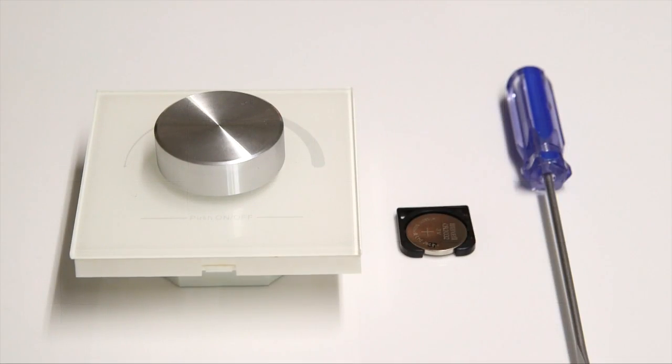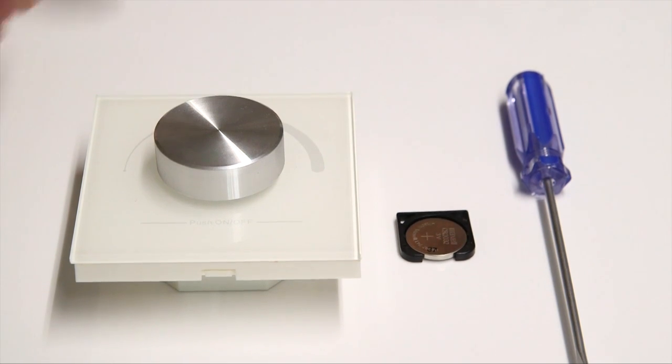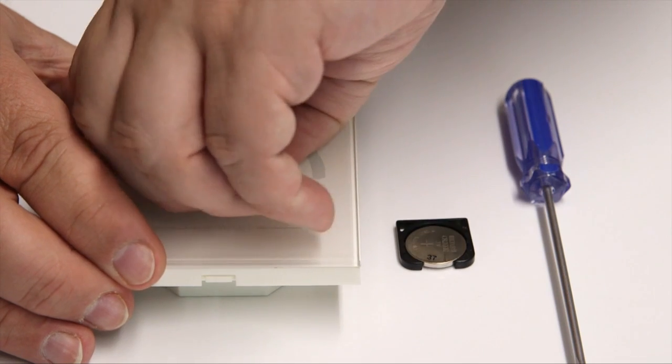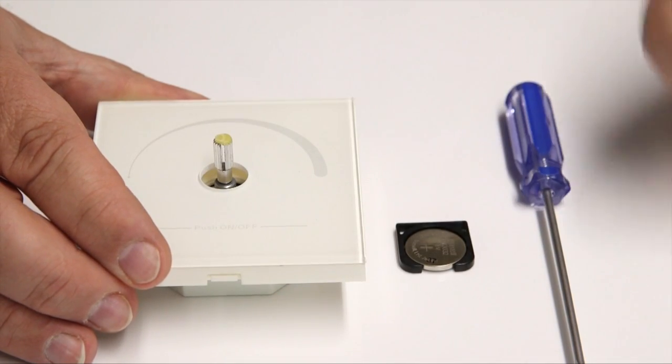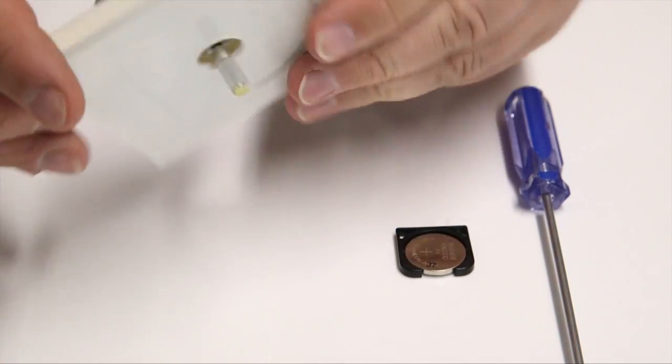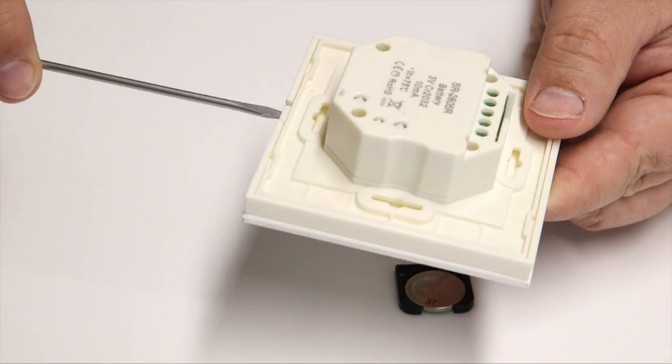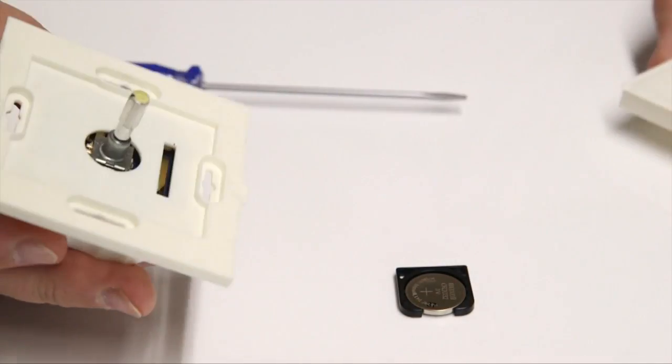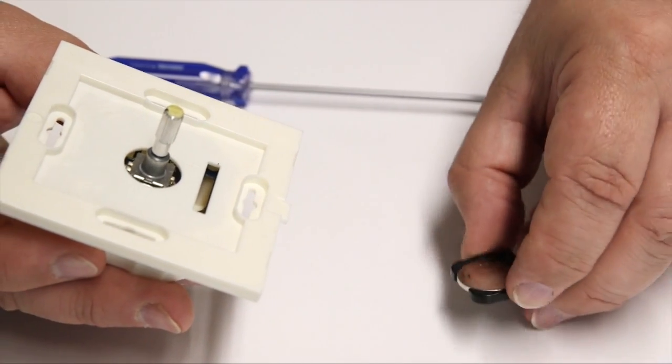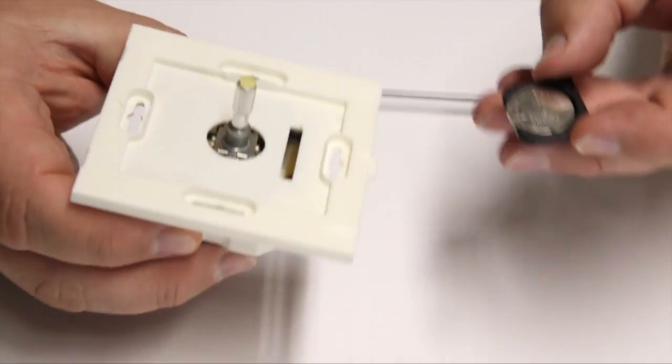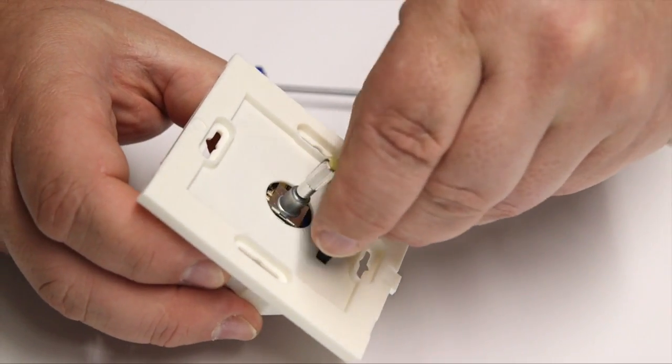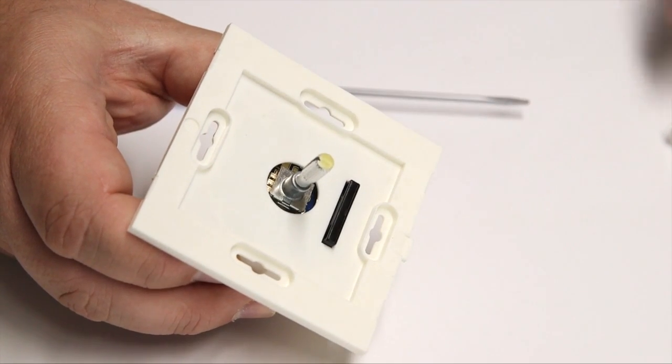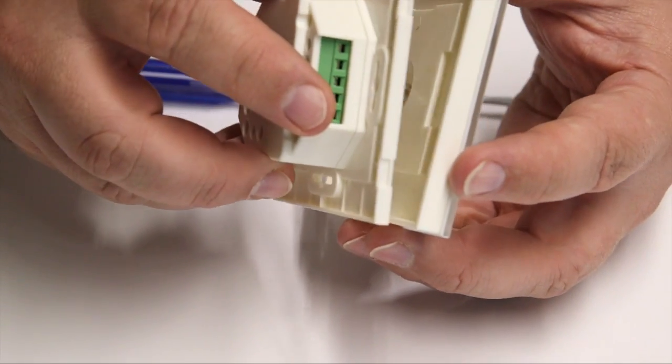To fit the battery, first remove the front face from the LED wall dim white by gently pulling the dial off along with the plastic collar. Carefully lever the front face off, then insert the button cell battery in its carrier in the slot as shown, ensuring the plus on the battery lines up with the plus marked on the unit. Then reassemble the front cover and replace the collar and dial.